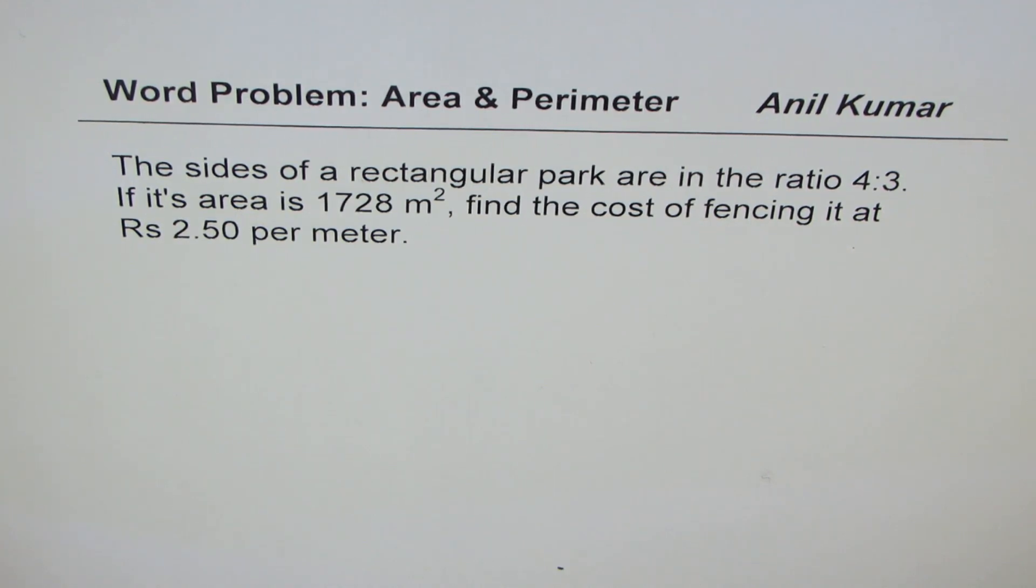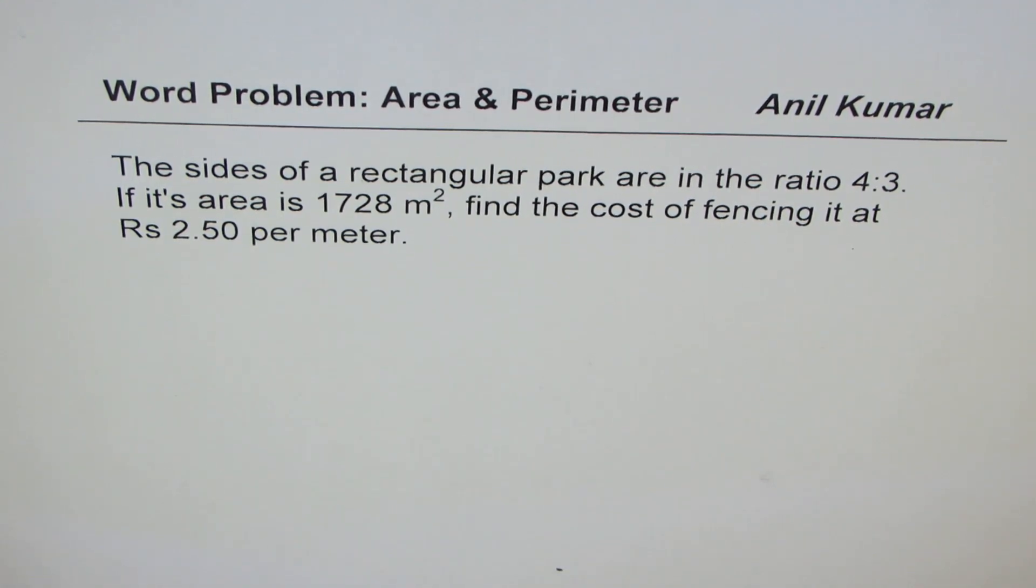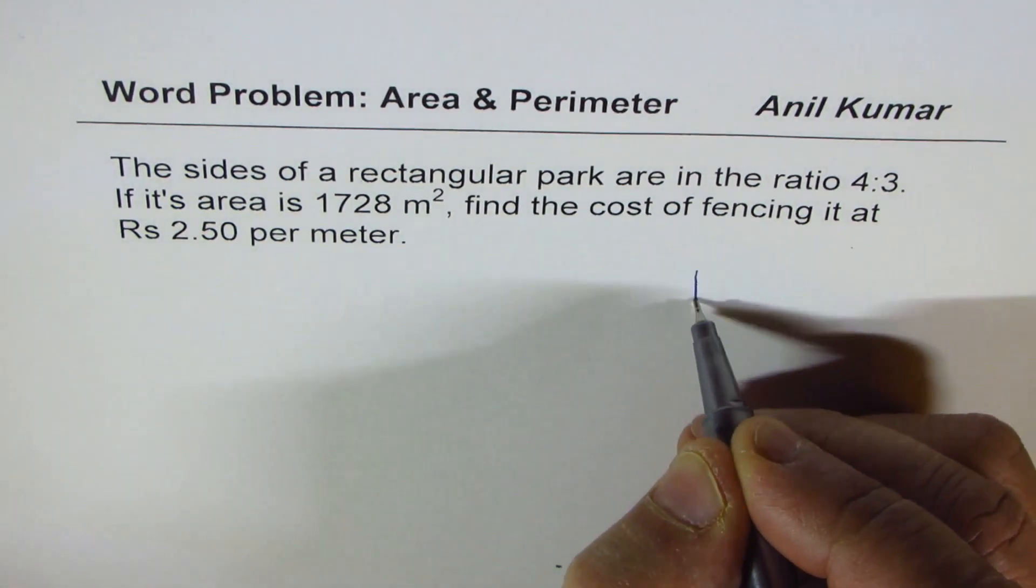The question here is: the sides of a rectangular park are in the ratio of 4 to 3. If its area is 1728 meter square, find the cost of fencing it at rupees 2.50 per meter. So let's first sketch and define our variables.